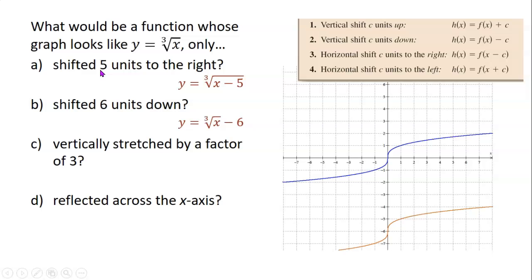What would be the function whose graph looks like y equals the cube root of x, only vertically stretched by a factor of three? So we get that by multiplying by three: y equals 3 times the cube root of x. And what would be the function whose graph looks like y equals the cube root of x only reflected across the x-axis? That would be y equals negative cube root of x. Points that used to be up above the x-axis with positive y coordinates are now down below the x-axis with negative y coordinates, and vice versa.